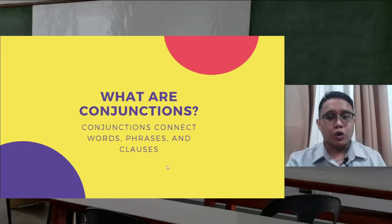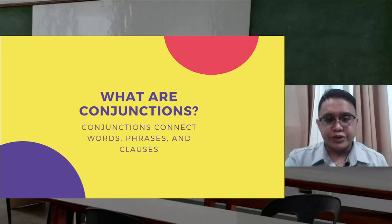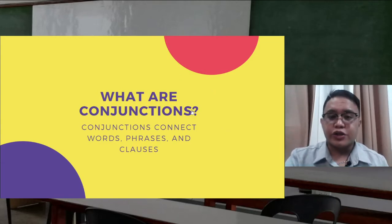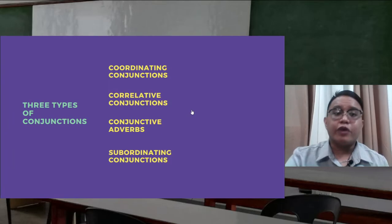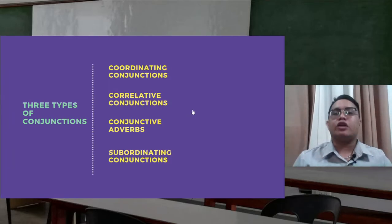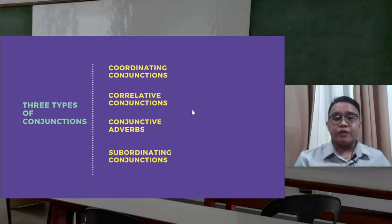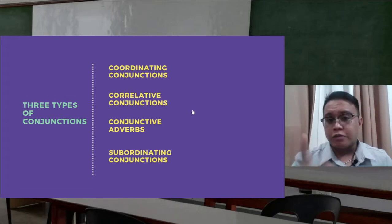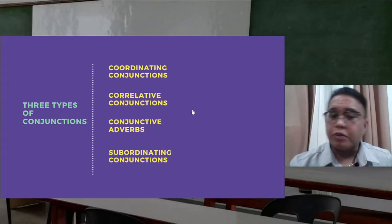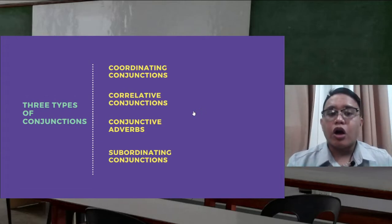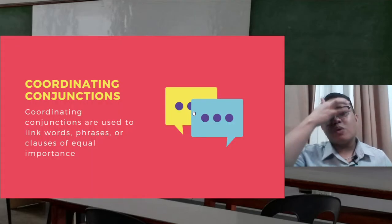There are four types of conjunctions: coordinating conjunctions, correlative conjunctions, conjunctive adverbs — which we talked about when we covered adverbs — and subordinating conjunctions.